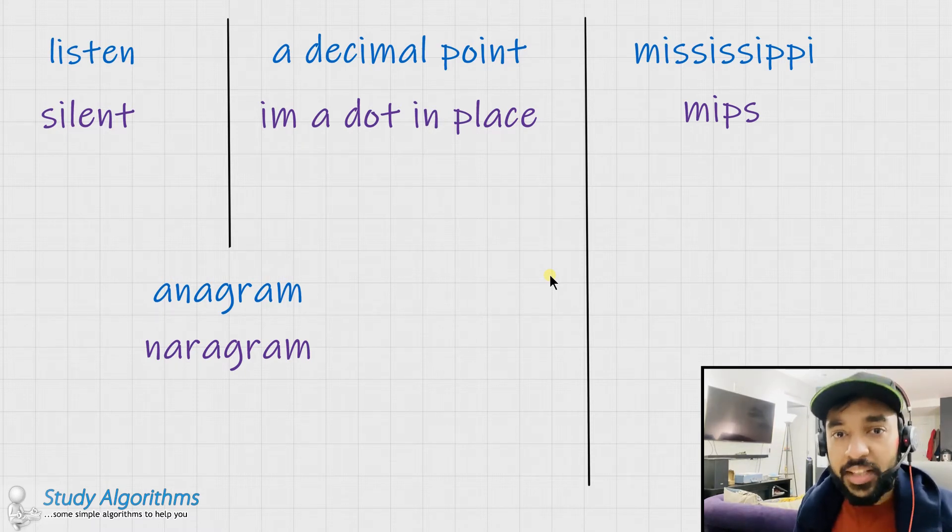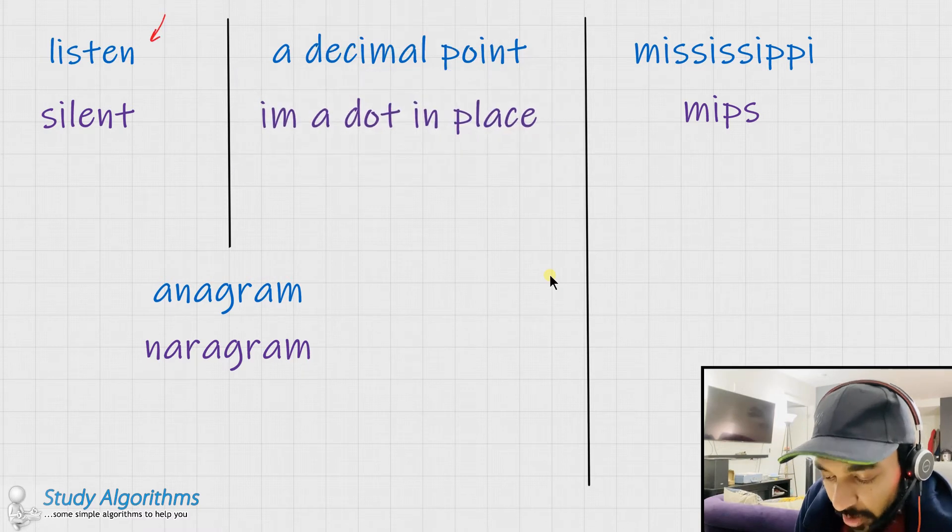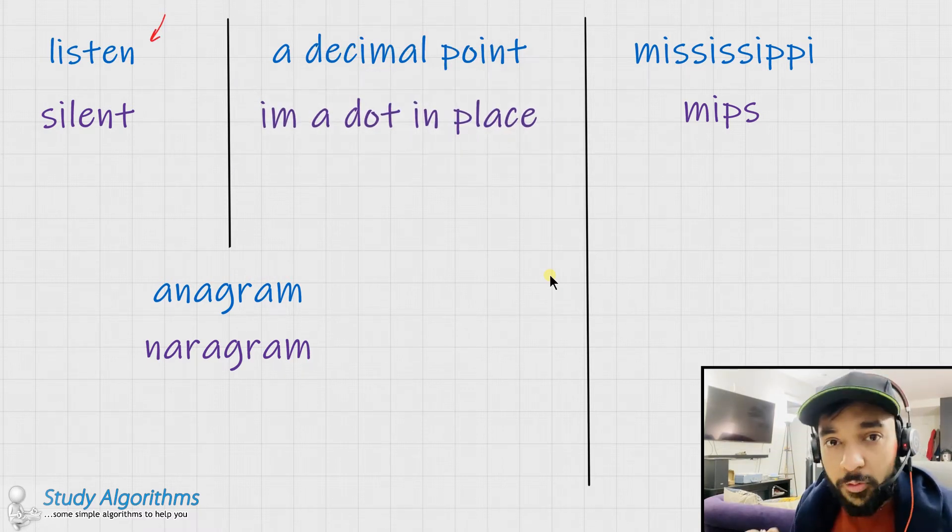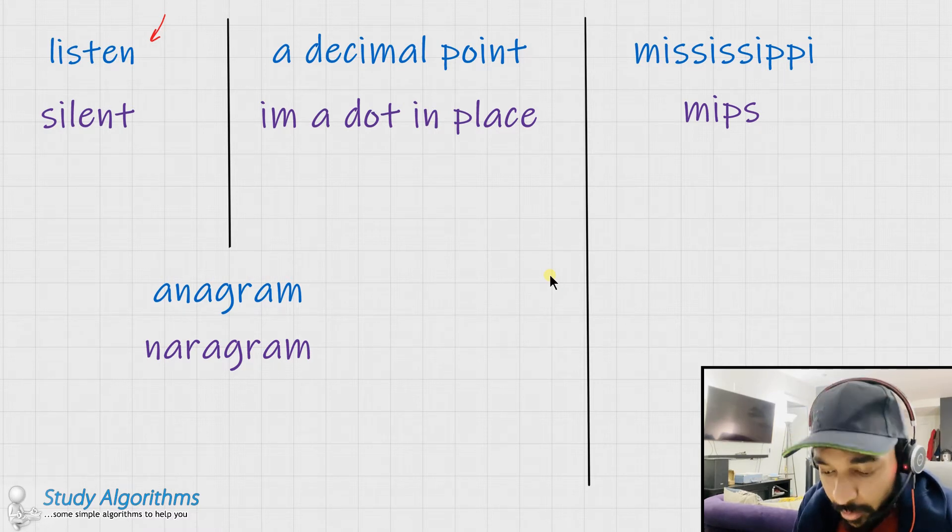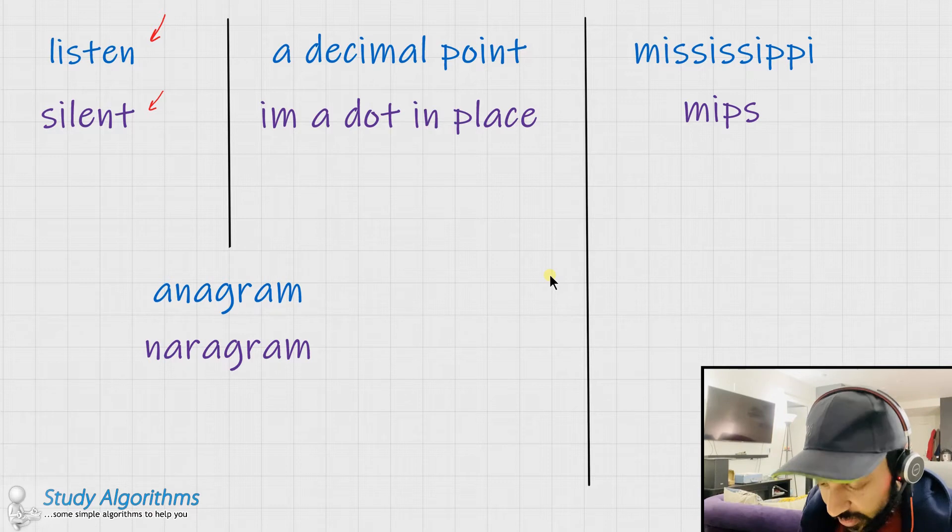Let us take up a few examples. So in our first example, we have the word listen. Now the characters of this word can be shuffled up to translate it into the word silent. And hence, this is an anagram.